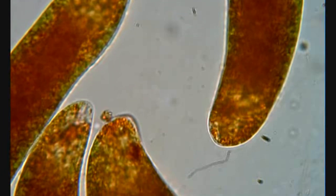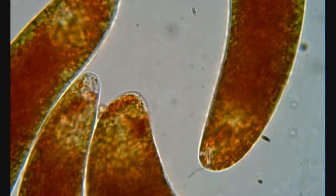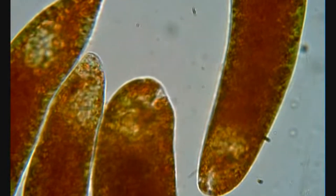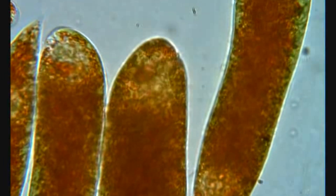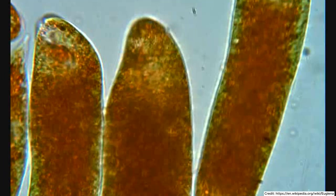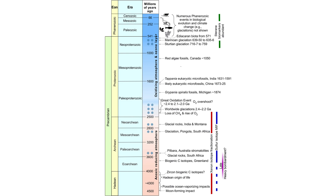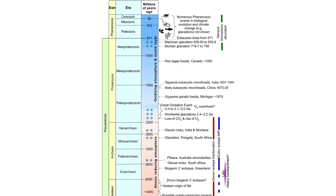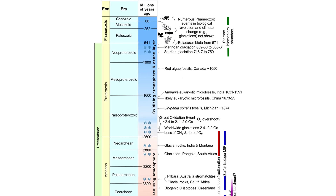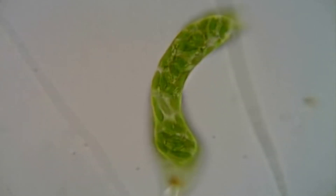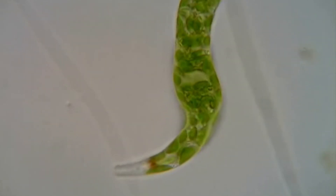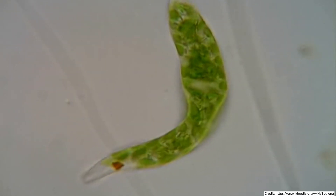The evolution of vision on Earth unfolded gradually over hundreds of millions of years with distinct milestones marking significant developments. The earliest form of vision likely began around 600 million years ago during the Precambrian era with the appearance of photoreceptive cells in simple organisms. These cells could detect light and dark but did not form detailed images.